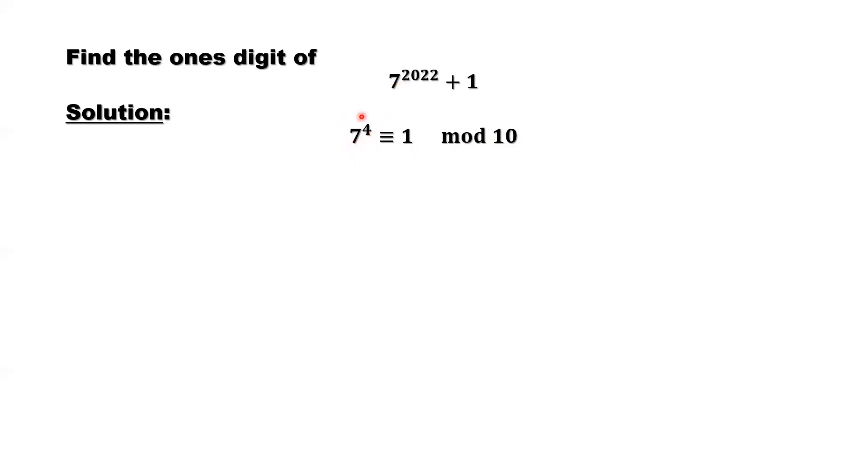So here, now the cycle is what? 7 to the power of 4. 4 is the size of the cycle.